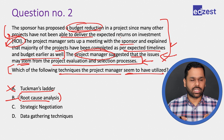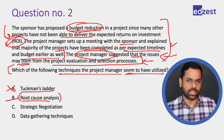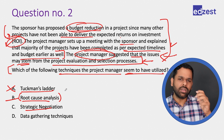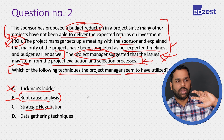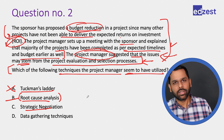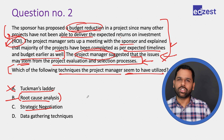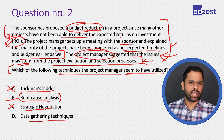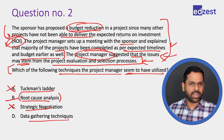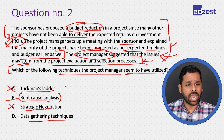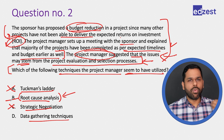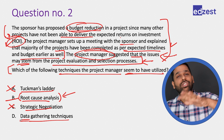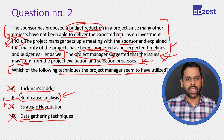Always park an option you're fairly confident about and check the remaining choices before deciding. Option C: Strategic negotiation — there is no negotiation in this question; the project manager only tried to explain the cause of the problem, so we eliminate it. Option D: Data gathering techniques — not explicitly mentioned. The question is clearly about identifying the root cause, so we eliminate D. Root cause analysis is the better choice.